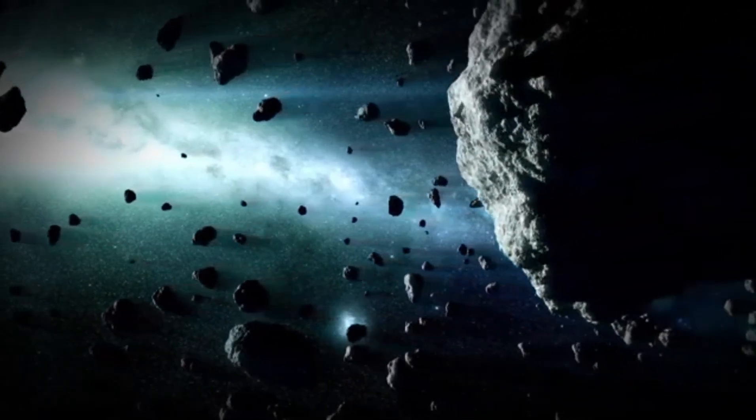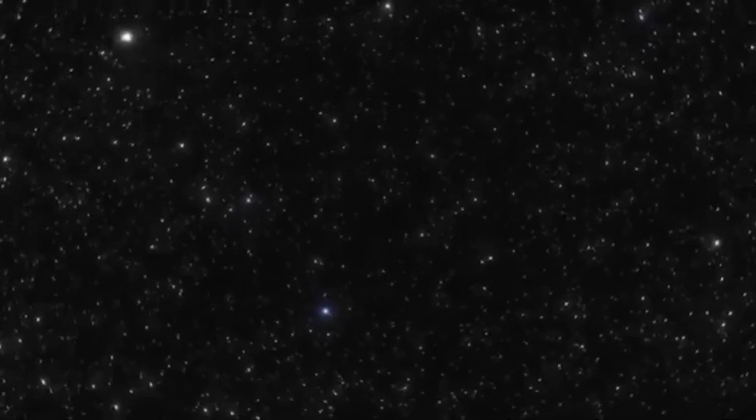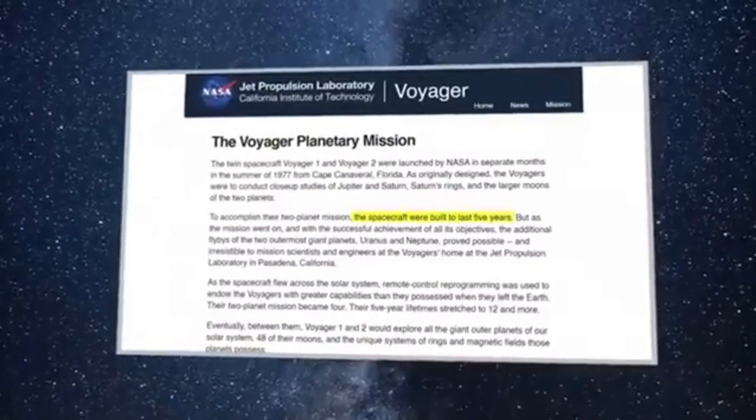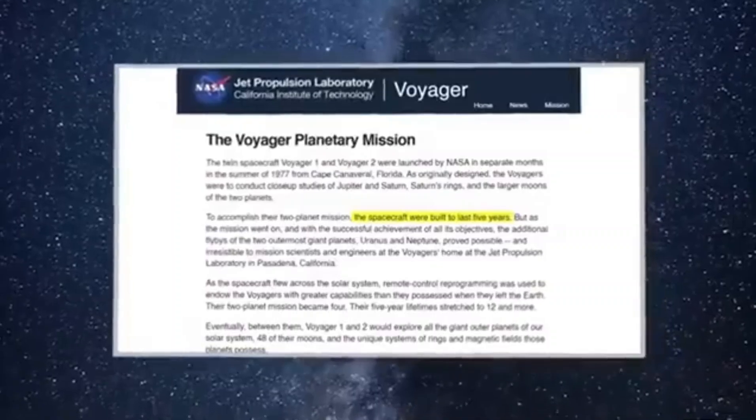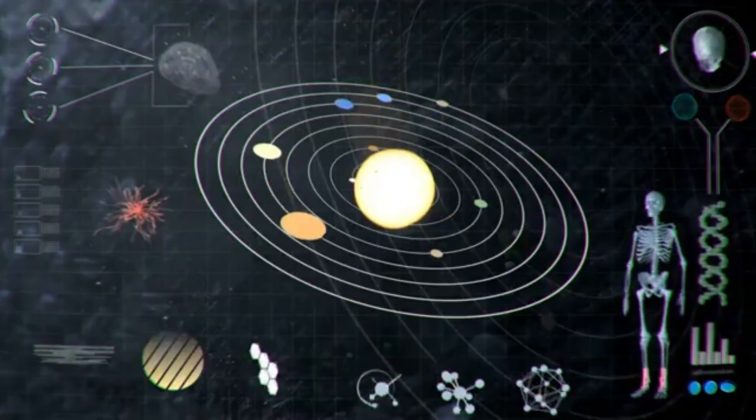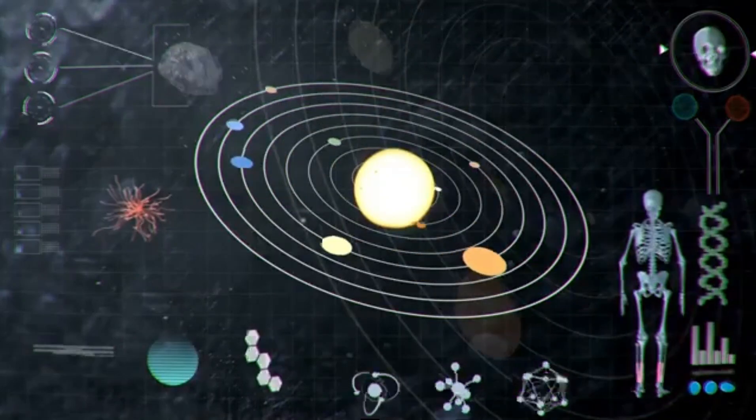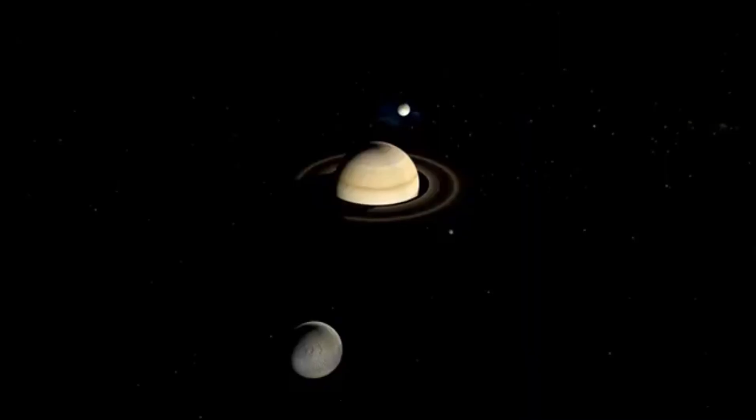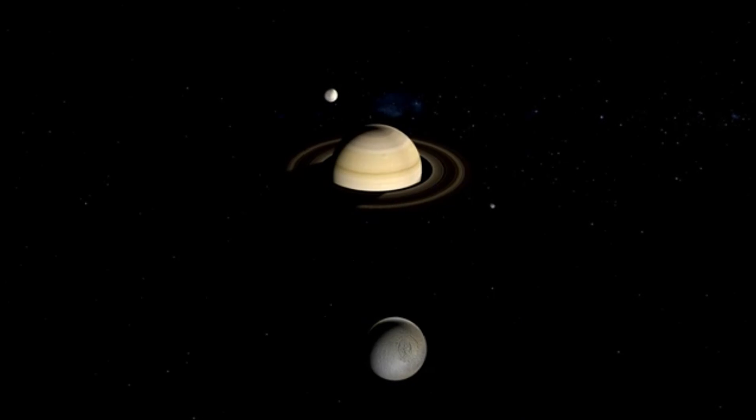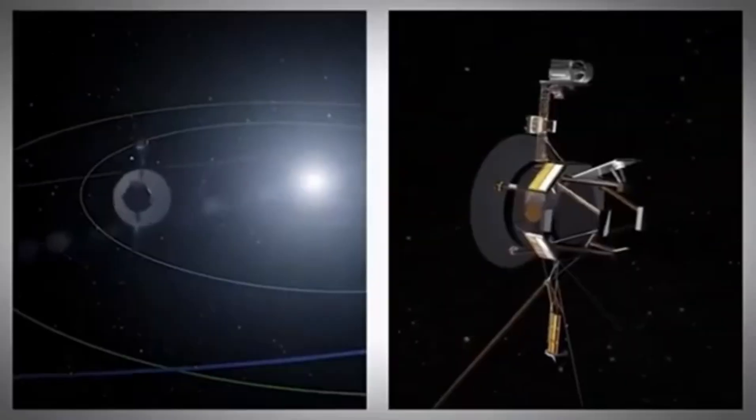As Voyager 1 ventured farther away from the sun, the amount of available sunlight to power its instruments and systems gradually diminished. The spacecraft primarily relies on three radioisotope thermoelectric generators, RTGs, to convert the heat produced by the natural decay of plutonium-238 into electricity. Over time, the declining heat output of the RTG has resulted in a reduction of available power.